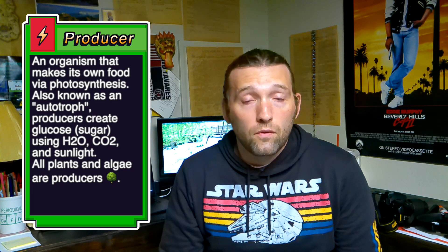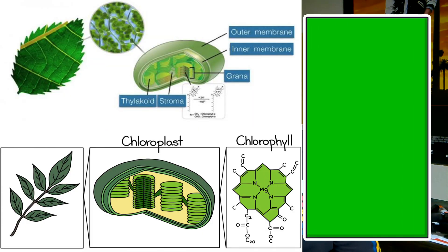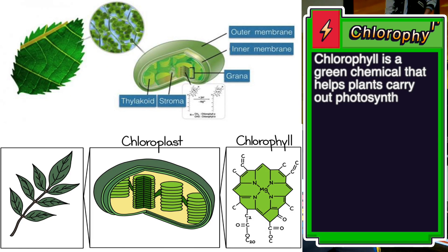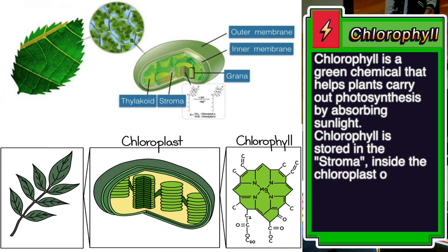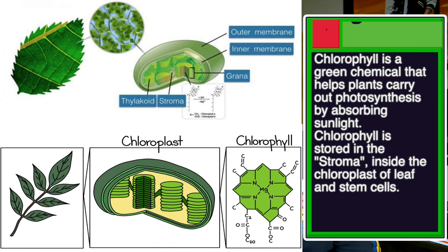Producers are anything that photosynthesizes and creates their own food. All of your producers are green because they have chlorophyll in them, which allows them to absorb sunlight and make sugar or glucose out of CO2 and water.